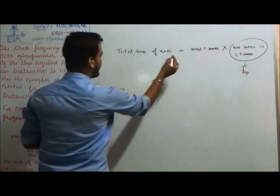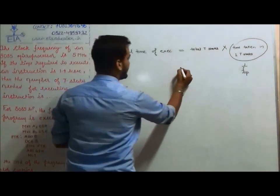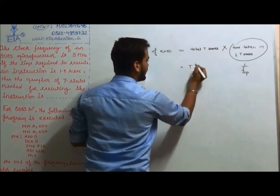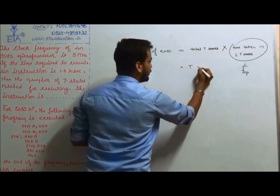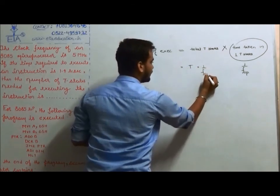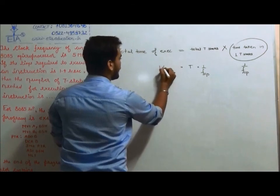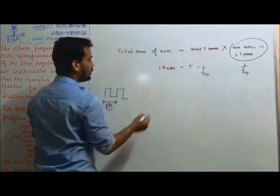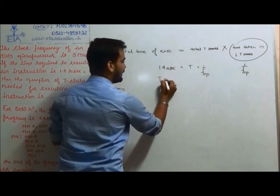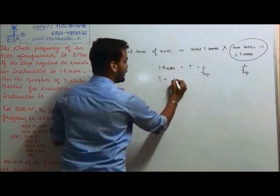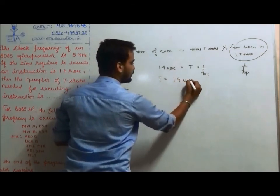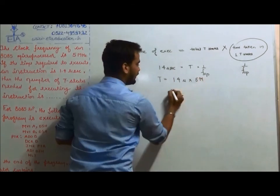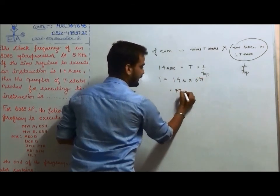So total time of execution equals T (total T-states) times 1/f (operating frequency), and it is given as 1.4 microseconds. Therefore, total T-states equals 1.4 microseconds × 5 MHz, which gives 7 T-states.